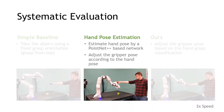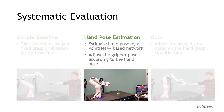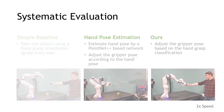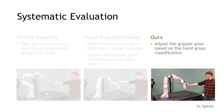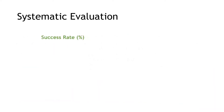In the hand pose estimation version of the system, we estimate the hand pose based on a PointNet++ based network and adjust the gripper pose according to the estimated hand pose. And finally, in our system, we adjust the gripper pose based solely on the hand grasp classification.